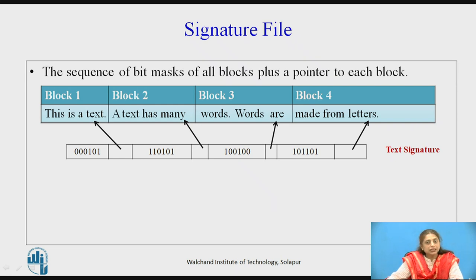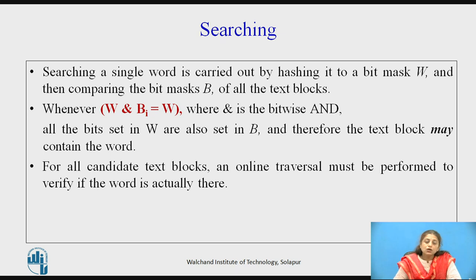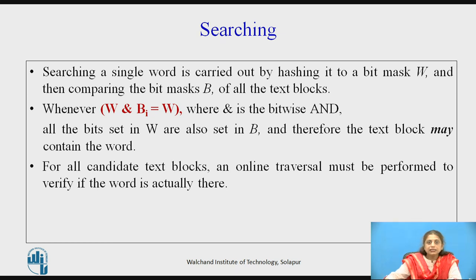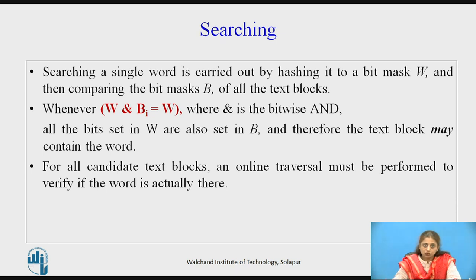Now that we have created the signature file, let us see how we can search. For searching any query, if it is a single word, find out the bit mask for that particular word. Then we have to do the ANDing operation of that bit mask — we call it w — with the bit mask for every block. If the result is the same as w, it means that all the bits set in w are also set in that block, meaning there is a possibility of finding the word in that block. We call this 'may contain' because of the phenomenon of false drop.